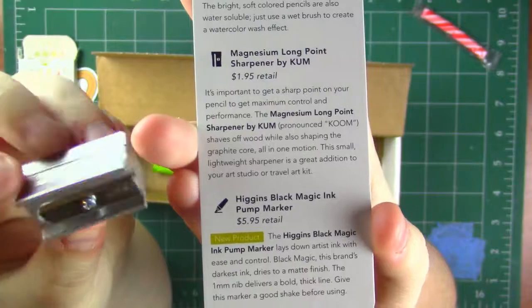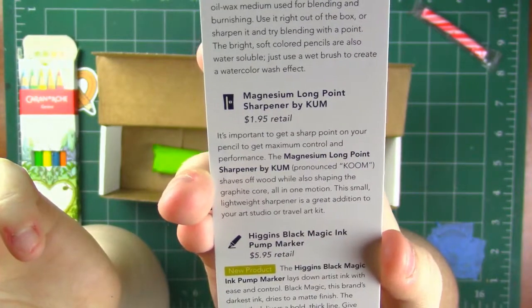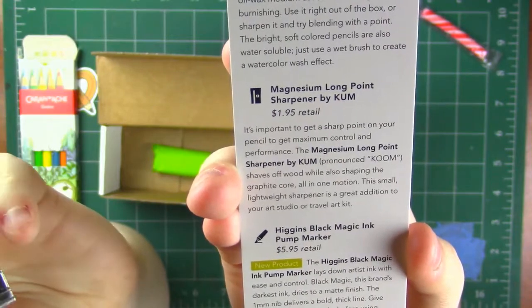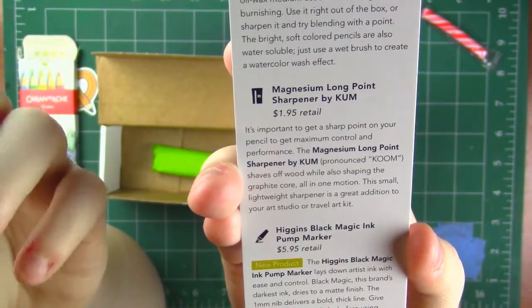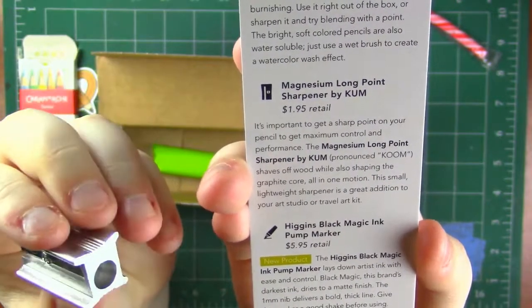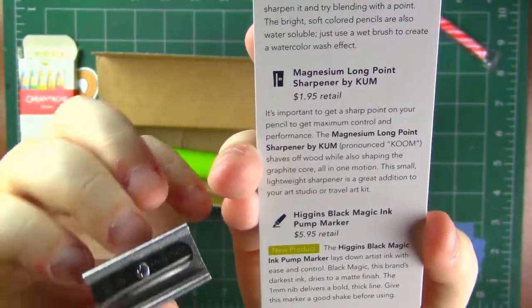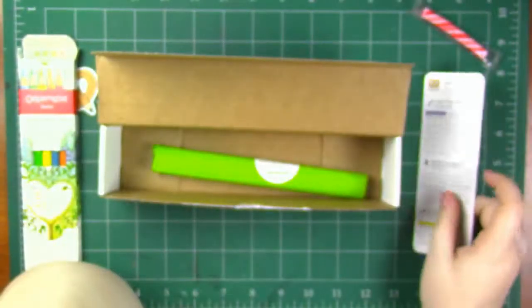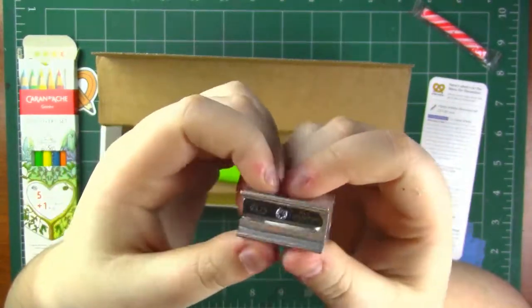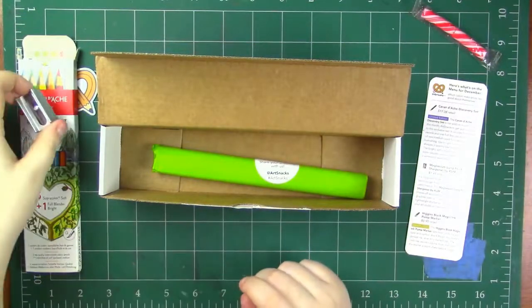Let's see what this has to say about it. This is a magnesium long point sharpener by Kum. It is a $1.95 retail. It's important to get a sharp point on your pencil to get maximum control and performance. The magnesium long point sharpener by Kum shaves off wood while also shaping the graphite core all in one motion. This small lightweight sharpener is a great addition to your art studio or travel art kit, which I will admit, yeah these are really good for taking on the go. But again I just prefer things that have a casing to catch the shavings because I'm a lazy person. I'll still use it. Kum always makes the best sharpeners in the world, at least the ones that I've used.